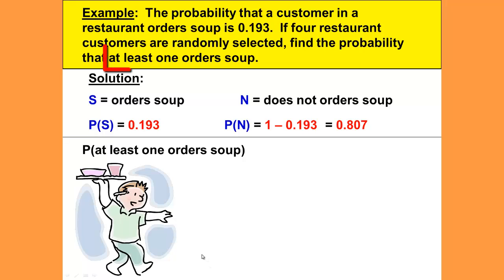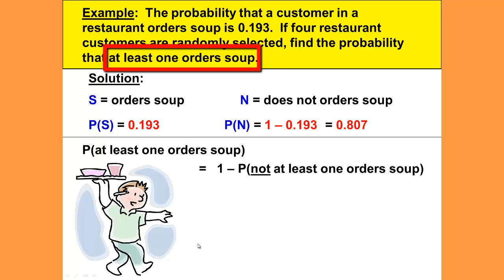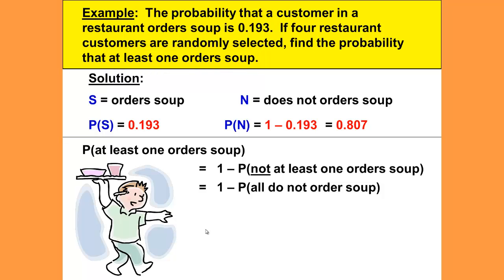The probability that at least one orders soup then would be 1 minus not at least one orders soup, for the complement, which we always want to use when we hear the phrase or see the phrase at least one. And not at least one orders soup is the same as all do not order soup.